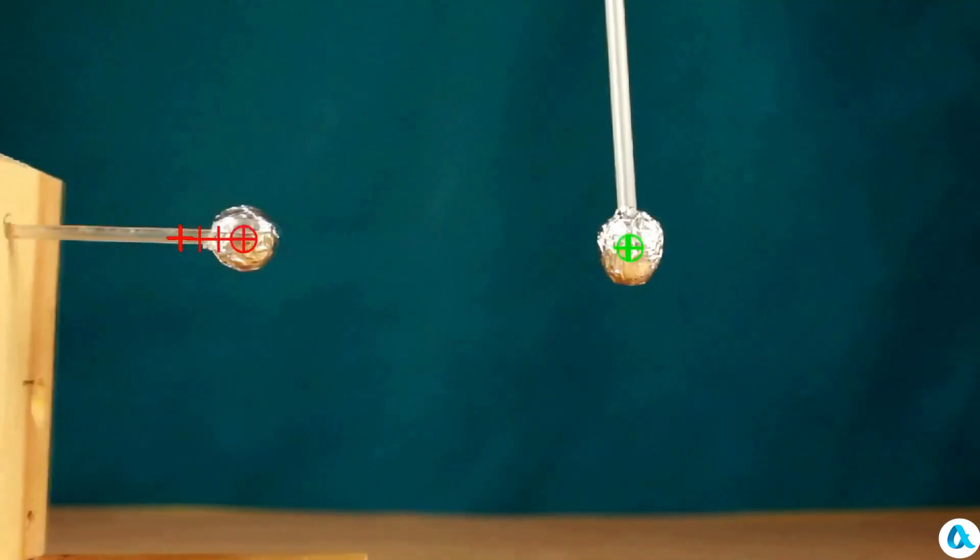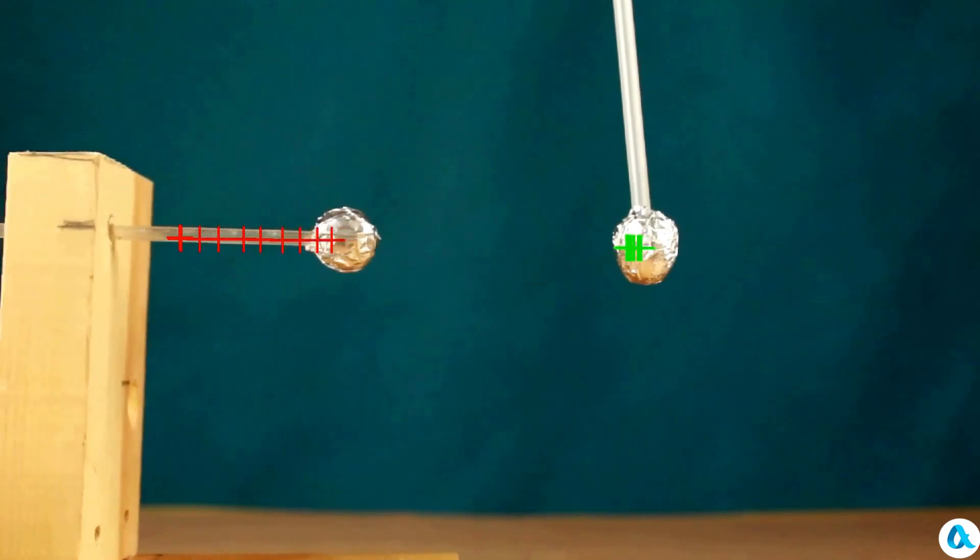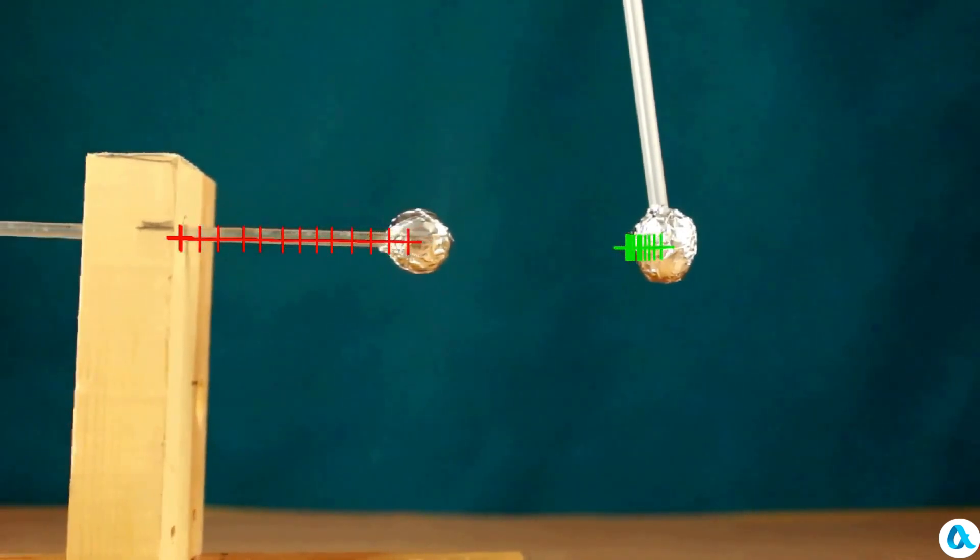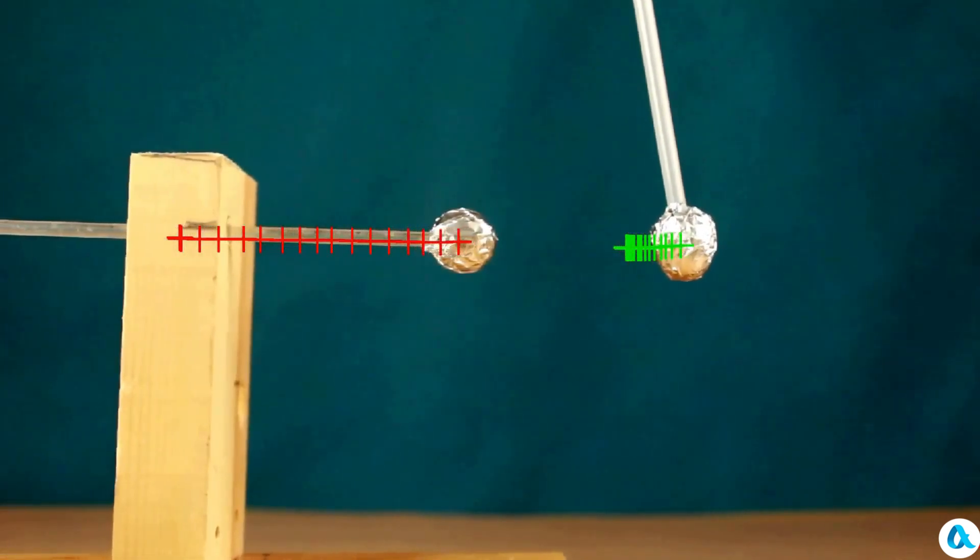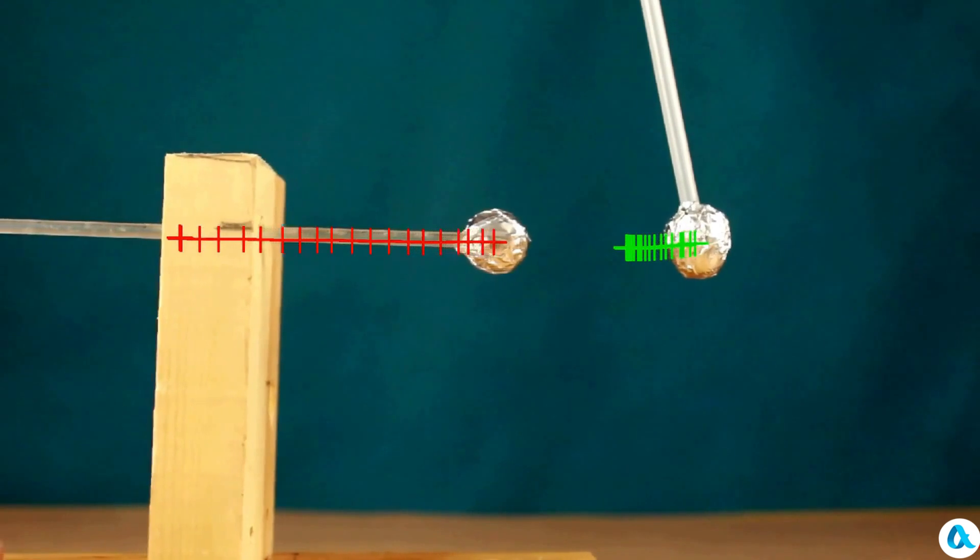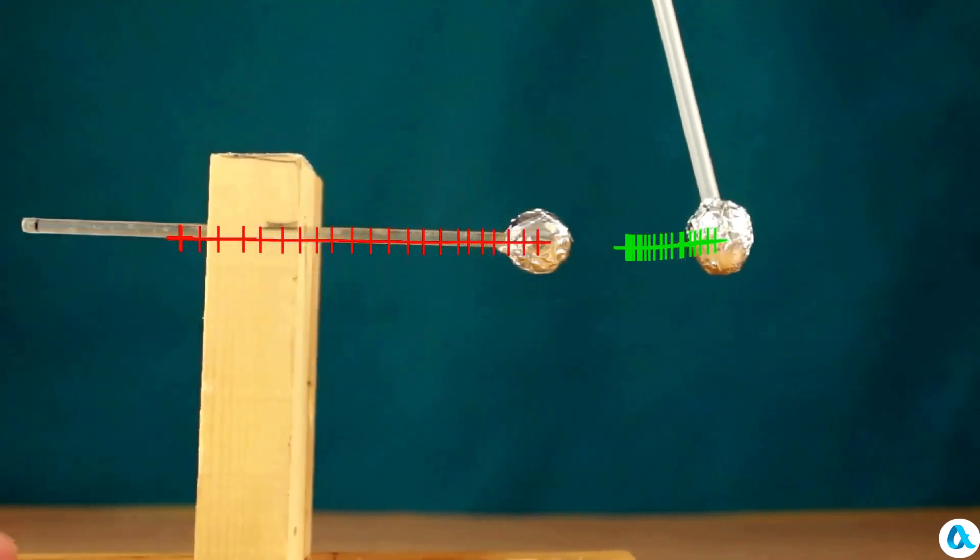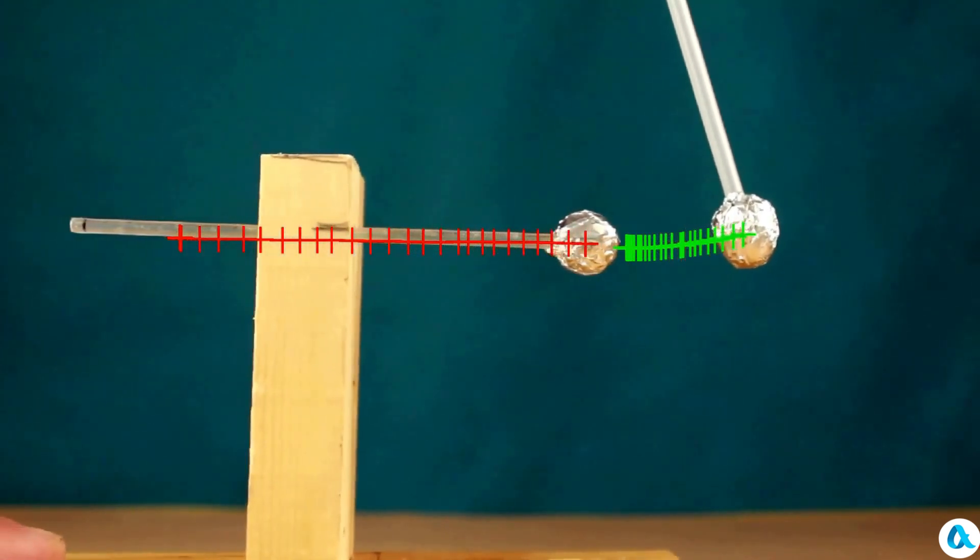I slowly move one ball towards the other and the balance gradually begins to deflect. So I know both the distance between the balls and the angle of deflection of the balance which is proportional to the repulsive force.